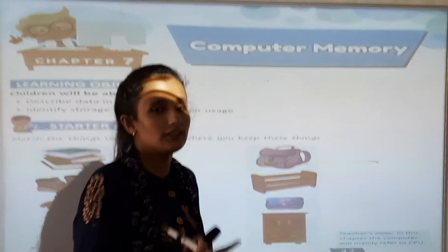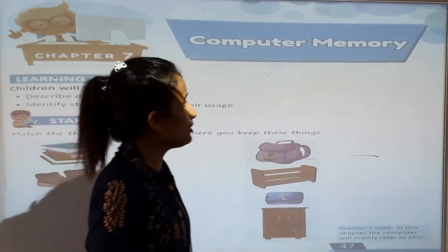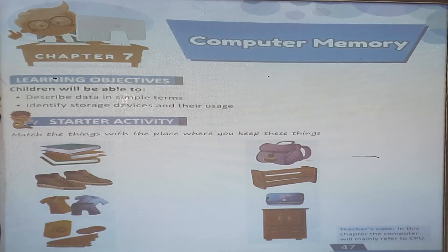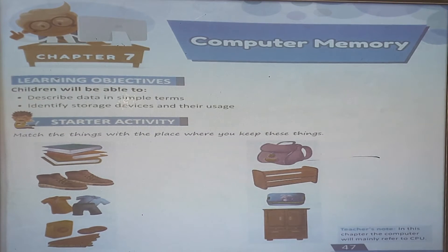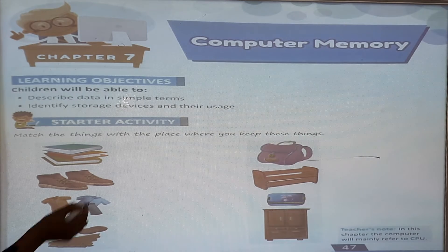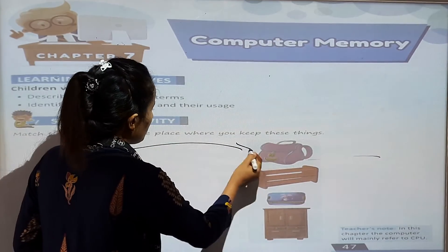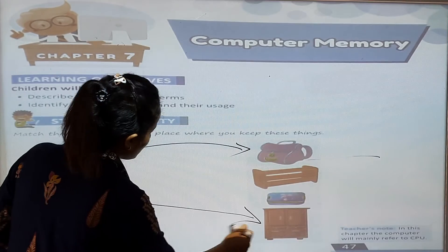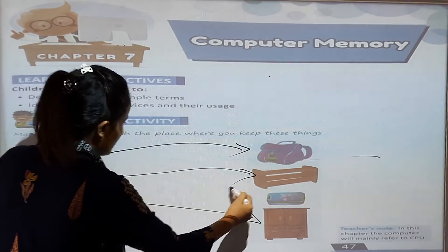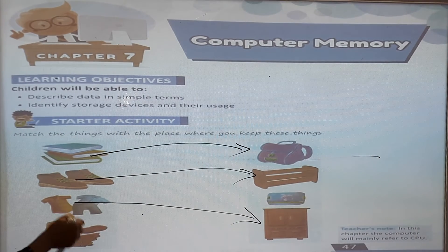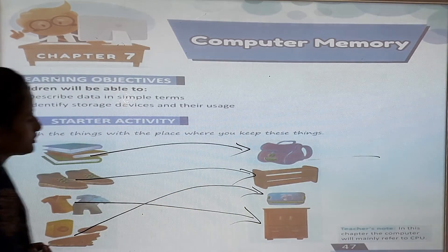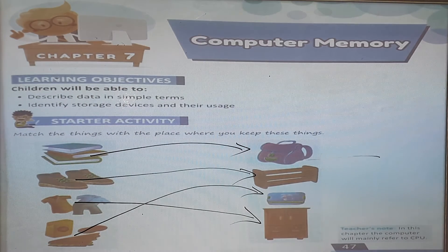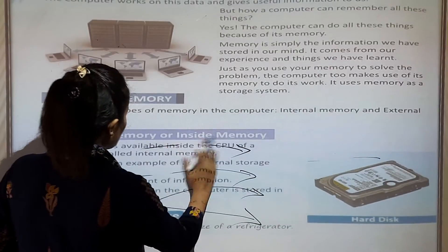There are so many types of memory, like pen drive, CD, DVD, and memory card. Now let's start an activity — match the things with the place where you keep them. For example, books we keep in bags, clothes we keep in a cupboard, shoes in a shoe rack, and food we keep in a lunchbox. You can do this matching activity in your book.